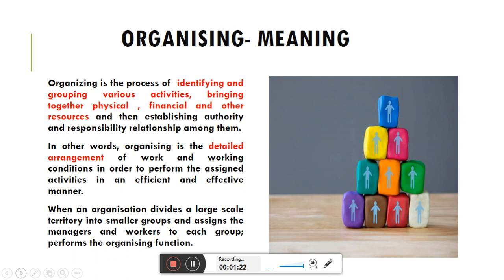अगर manager ने objectives को achieve करना है तो planning के बाद जो main function आता है वो organizing है। Planning में क्या किया जाता है कि manager अपने objectives को, अपने aim को set करता है कि मेरा final position या end result क्या होना चाहिए। उसके बाद वो देखता है कि उस objective को achieve करने के लिए कौन-कौन सी activities को perform करना पड़ेगा।